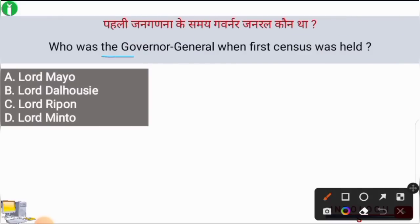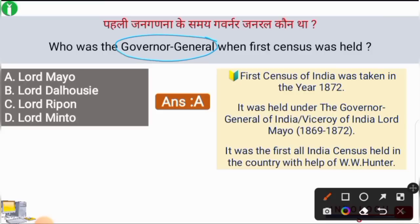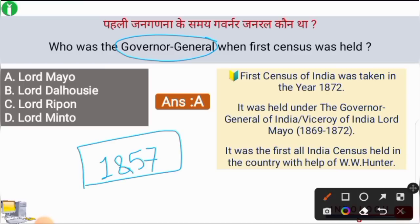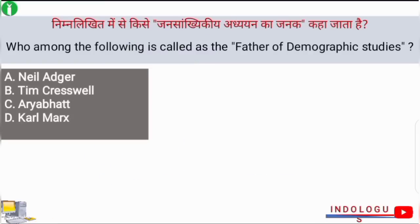Next question: who was the Governor General when the first census was held? The correct answer is option A — Lord Mayo. After the first war of independence in 1857, the Governor General's title changed to Viceroy under the direct British Crown. The first census of 1872 was taken under Lord Mayo, Viceroy from 1869 to 1872, with the help of W.W. Hunter.